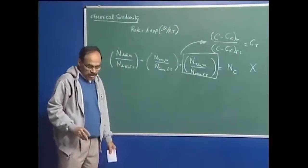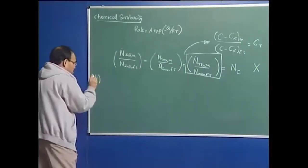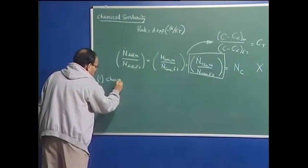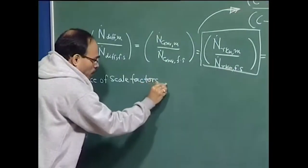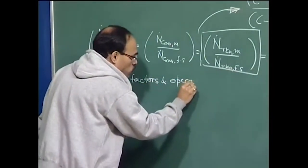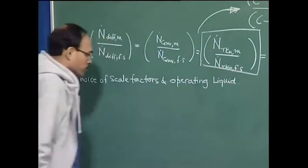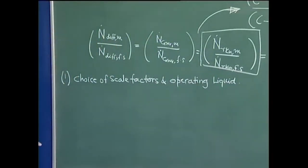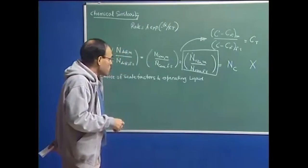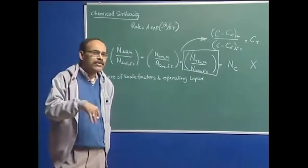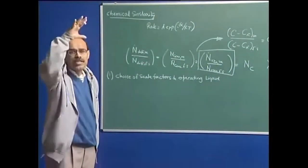Having said so much about the principles of physical modeling, let us now look at the choice of scale factors and operating liquid. Scale factors will typically vary: greater than 0 and less than or equal to 1. The modeler has an option to go for a scale factor of 0.2, 0.3, 0.4, or whatever is convenient.